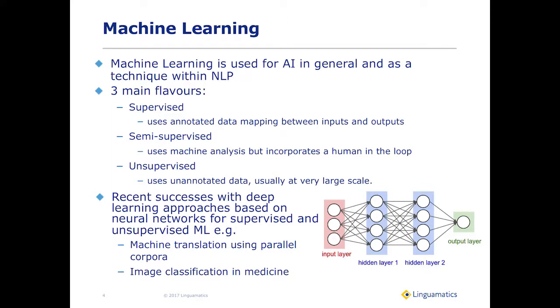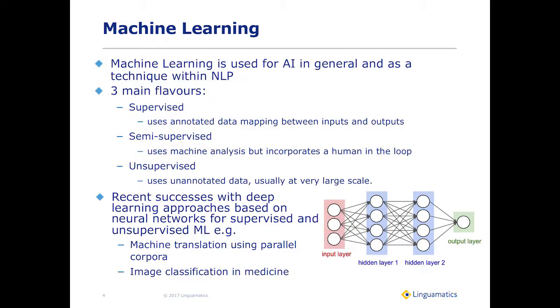Machine learning is used in AI in general, but also as a technique within NLP. Machine learning methods have been very popular in NLP, probably for the last 20 years, and they've really been regarded as one of the main paradigms in NLP.